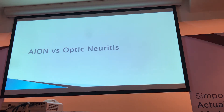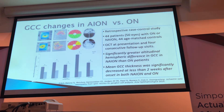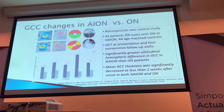In terms of NAION versus optic neuritis — in a retrospective case-control study of 44 patients with 50 eyes with optic neuritis versus NAION and 44 age-matched controls, OCT was done at presentation and four consecutive follow-up visits. There was a significantly greater altitudinal hemispheric difference in GCC in NAION patients versus optic neuritis patients. GCC thickness decreased in less than two weeks after onset in both NAION and optic neuritis, even with disc edema and RNFL swelling present.